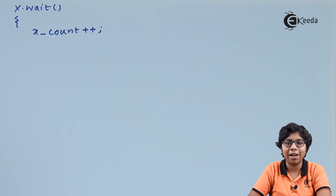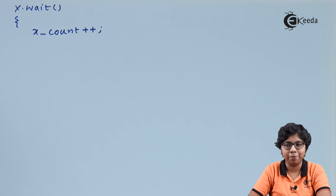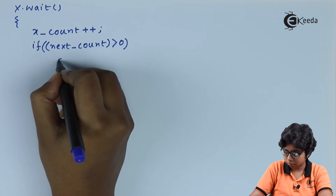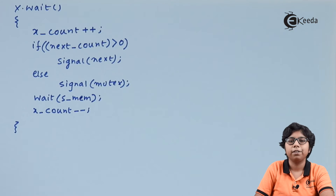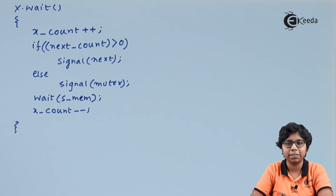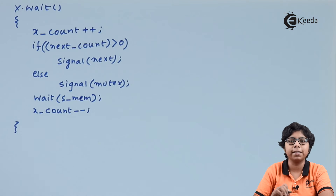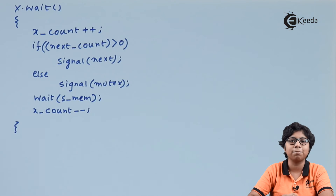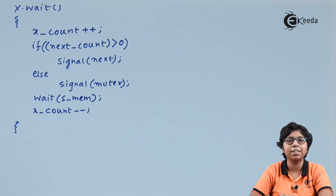Using these two data structures we can implement the condition variable attachment to a monitor. By incrementing x_count by one, we tell the operating system that in the monitor there is a condition variable with a process attached to it. If a process is suspended on next we signal next; otherwise we signal the mutex semaphore. We wait using wait(x_sem) attached to the condition variable, and after performing its critical section on the monitor, we release the process by decrementing x_count, indicating the process is no longer attached to condition variable x.